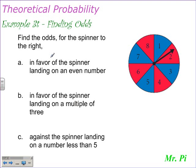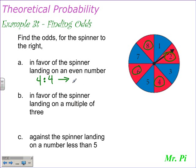Here's example 3T. Find the odds for the spinner. Find the odds in favor of the spinner landing on an even number. The favorable outcomes would be even numbers: 2, 4, 6, and 8. So there are four favorable outcomes, which leaves us with four unfavorable outcomes. Like any fraction or ratio, we need to reduce that — so that would be one-to-one odds. You have an even money chance of spinning an even number.